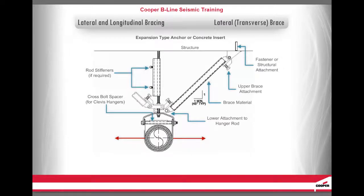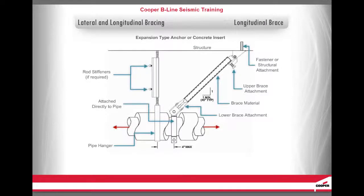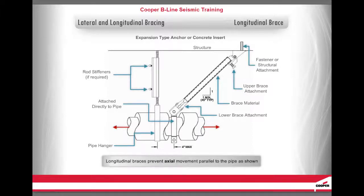Here is a diagram of a lateral or transverse brace. Lateral transverse braces prevent movement perpendicular to the pipe, for cable tray, air duct, conduit, or other non-structural systems. Here is a diagram of a longitudinal brace. Longitudinal braces prevent axial movement parallel to the pipe, for cable tray, air duct, conduit, or other non-structural systems.